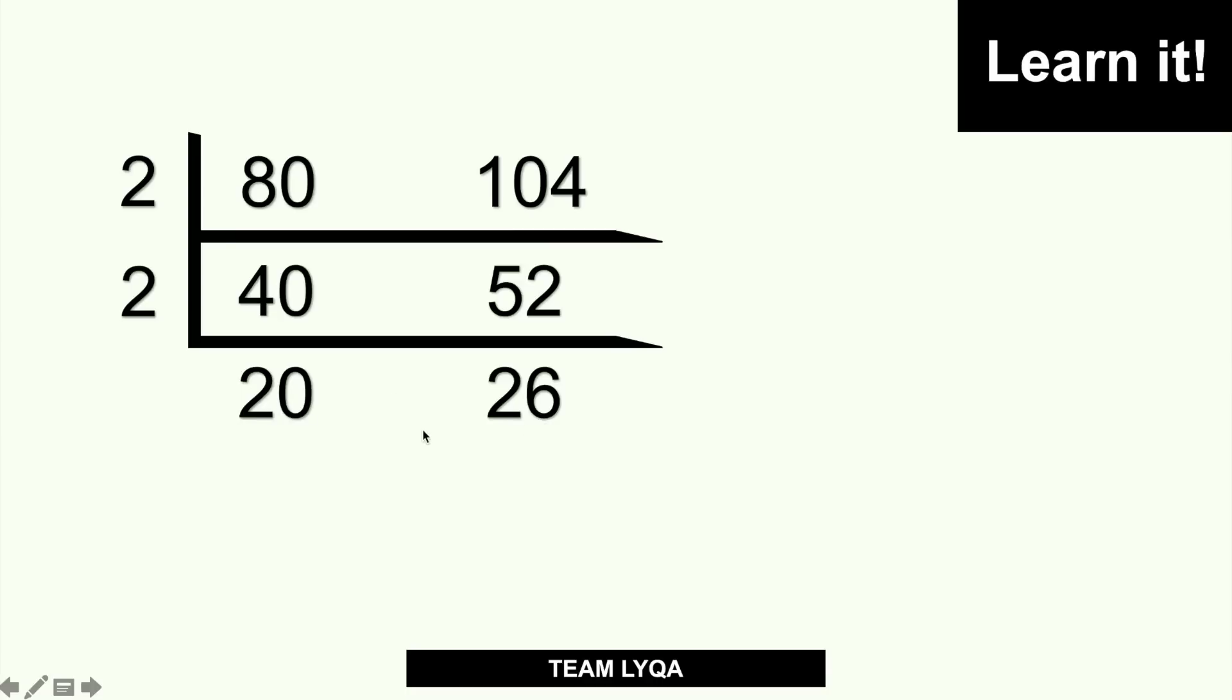Now, same thing, again, it still works with 2, because they can both still be divided by 2. So, I'll put another rung, another 2 right there. I'll divide them again. 20 divided by 2 is 10. 26 divided by 2 is 13.